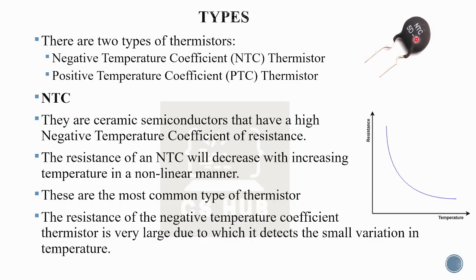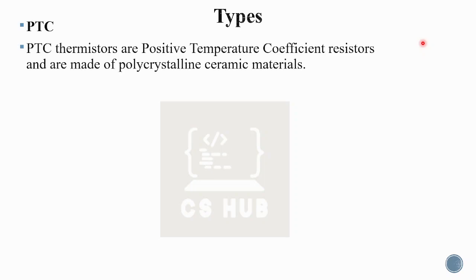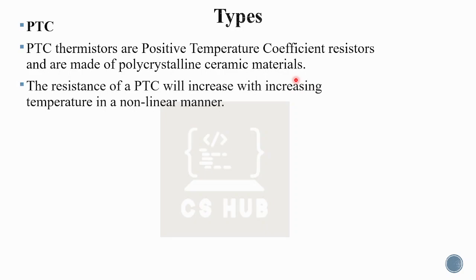The NTC thermistor has lead wires enclosing the metallic oxide. This is NTC. The PTC, or Positive Temperature Coefficient resistor, is made of polycrystalline ceramic materials and has a high positive temperature coefficient.